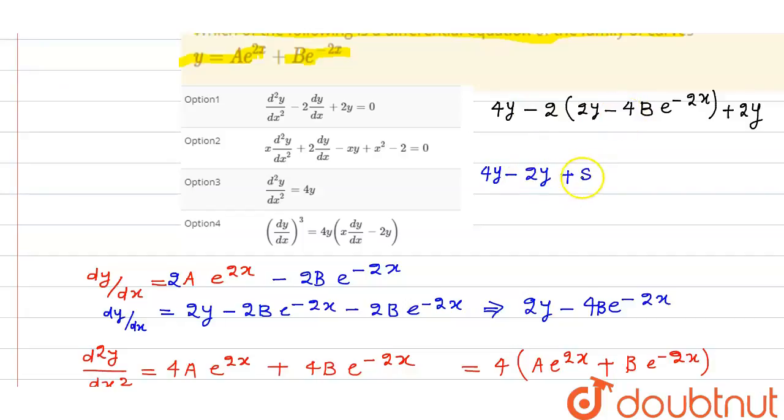So here we have 4y minus 2y, this minus and this minus becomes plus 8b e to the power minus 2x plus 2y. This thing gets cancelled out but we're left with 2y plus 8b e to the power minus 2x which is not equal to 0.